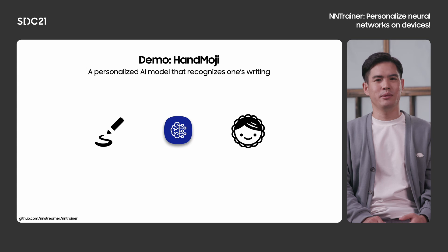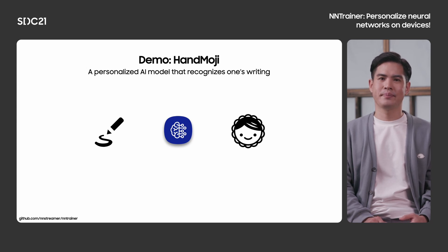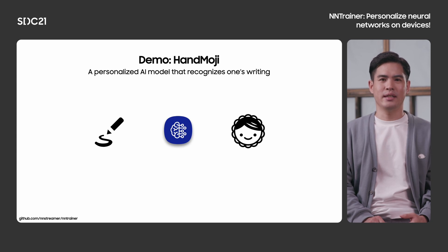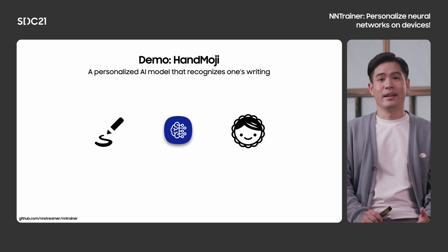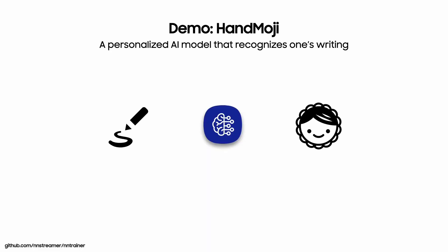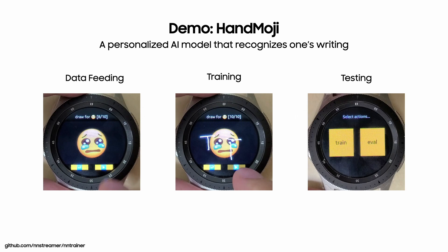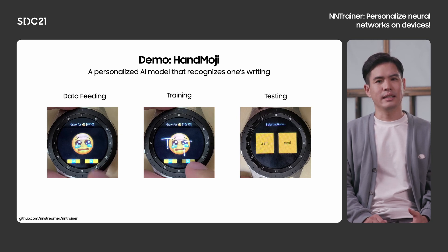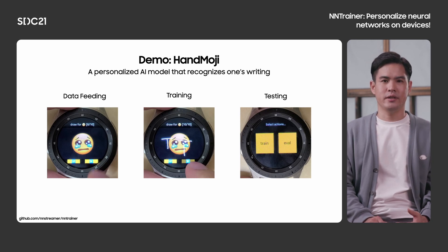The demonstration simulates turning handwriting into an emoji. In this demo, the user is asked to draw symbols for emojis like smile and sad, and then the model inside is trained to learn the symbol. Later, the model is evaluated on the fly. First you feed the data with handwritings for each emoji, then after feeding data is done, training undergoes, and lastly you can run an evaluation where you draw something and let the model guess.